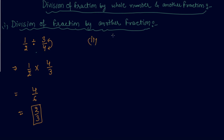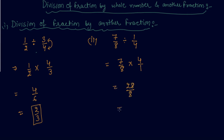Similarly, let's divide 7 by 8 by 1 by 4. These types of questions might come in exams where you are asked to divide one fraction by another fraction. When I change the sign of division into multiplication, the position of numerator and denominator changes. On dividing the numerator and denominator by 4, the answer is 7 by 2.